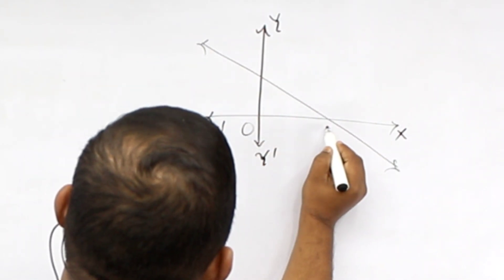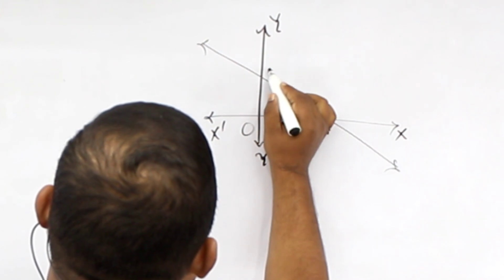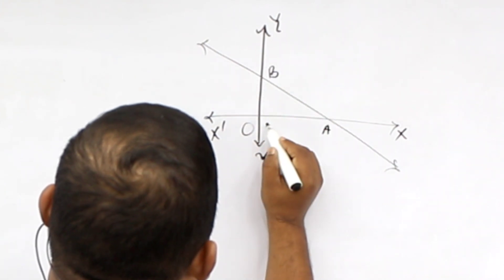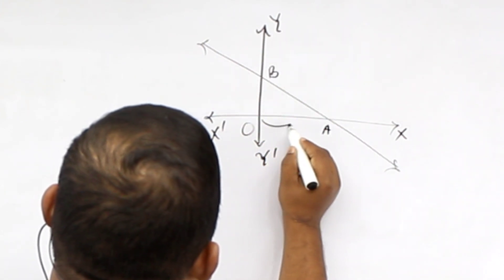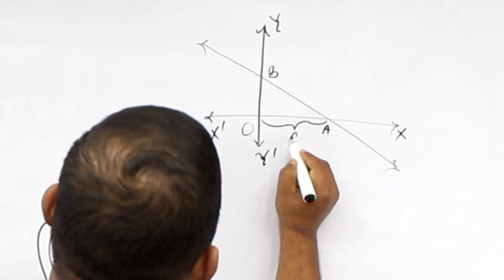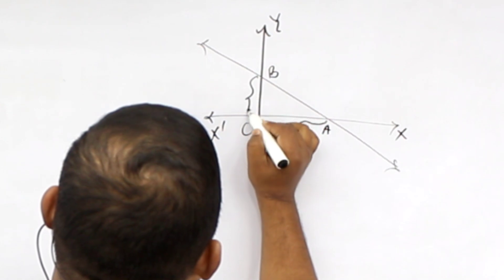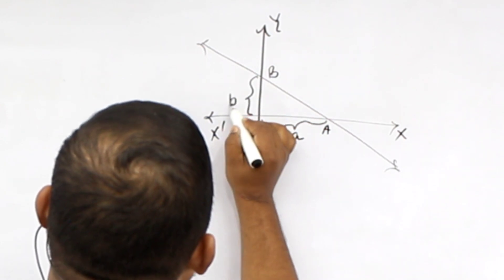A is equal to A, and B is equal to A and B, and Y is equal to B.